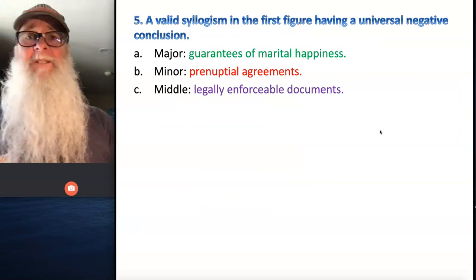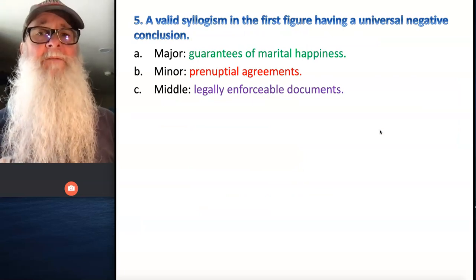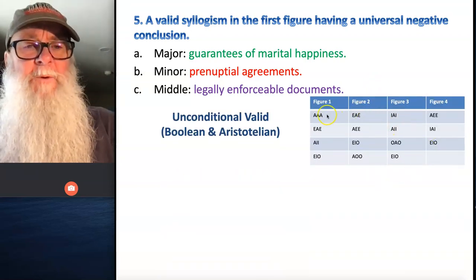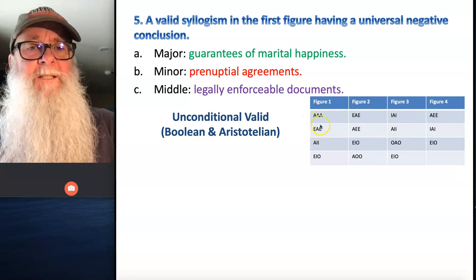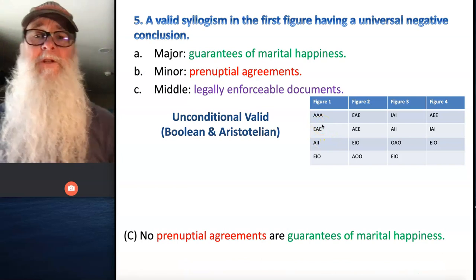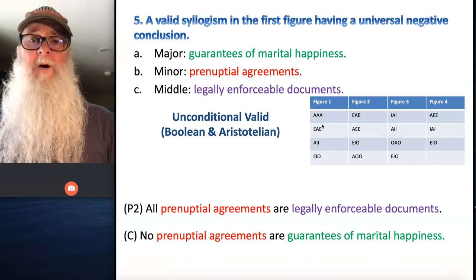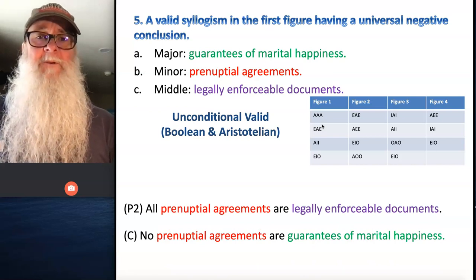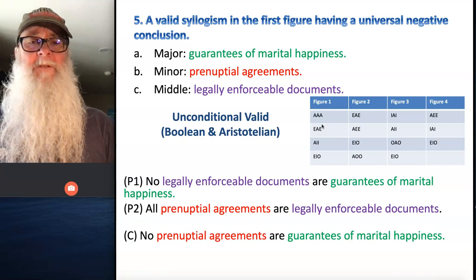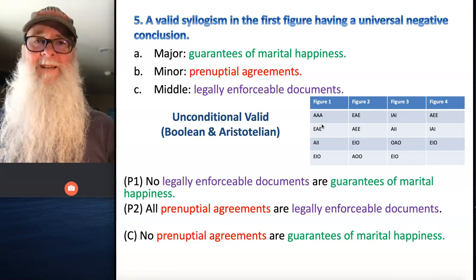And finally: a valid syllogism in the first figure having a universal negative conclusion. So which of the forms in figure one has an E statement for its conclusion? It's right here — EAE. So our conclusion statement: no prenuptial agreements are guarantees of marital happiness. Our minor premise is all prenuptial agreements are legally enforceable documents, and our major premise is no legally enforceable documents are guarantees of marital happiness.